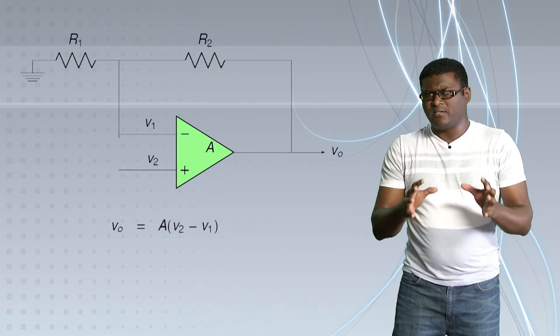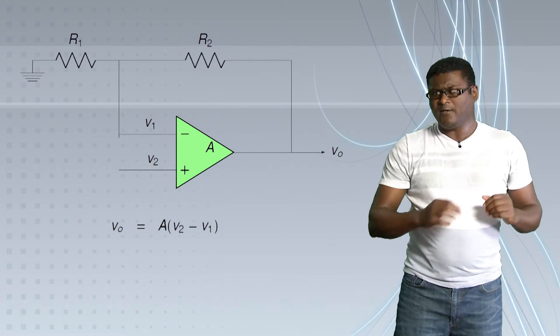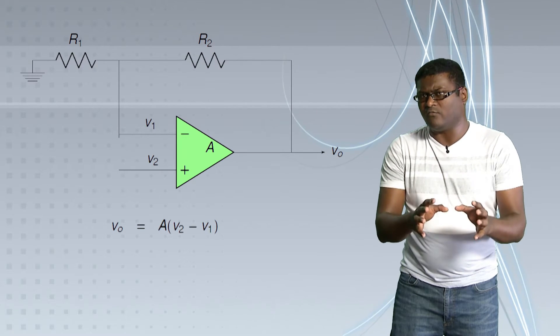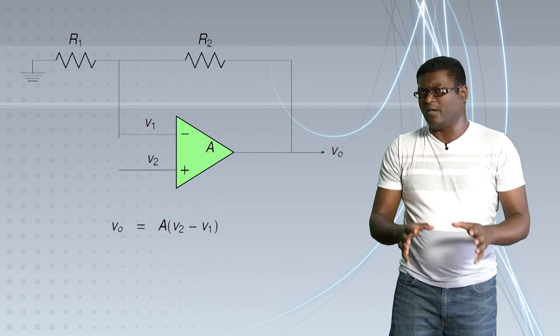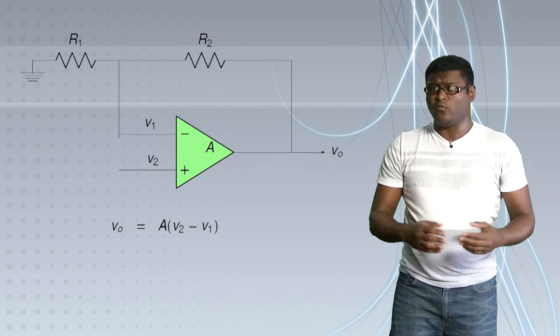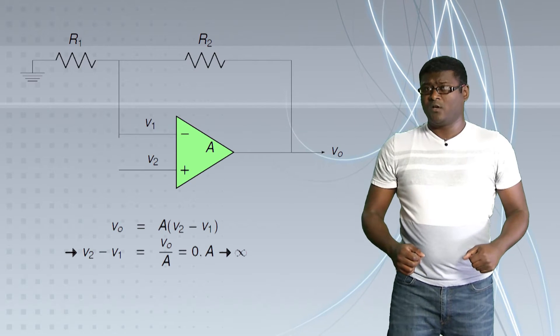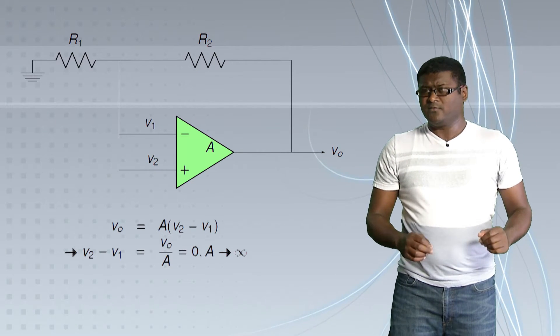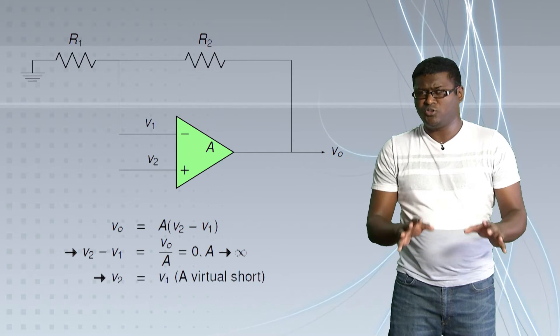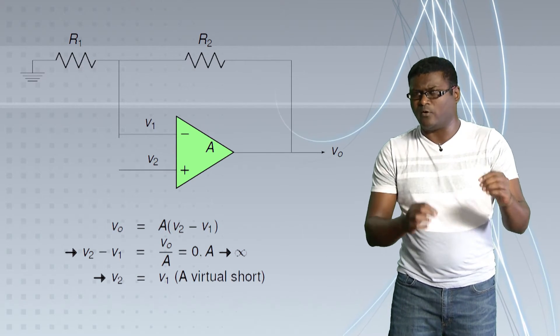So, V0 is finite. A is infinite. And what should V2 minus V1 be as limit A tends to infinity? Turns out V2 minus V1 should be zero if A is infinite. Now, this is a very important property of an op-amp. That is, there is always a virtual short between V2 and V1 or the negative pin and the positive pin.